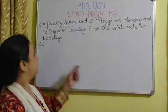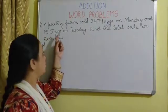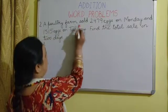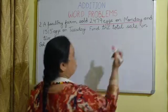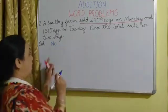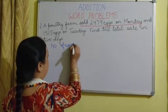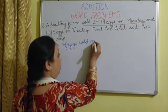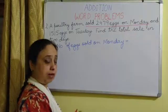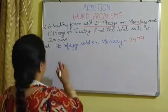The next word problem is: A poultry farm sold 2479 eggs on Monday and 1515 eggs on Tuesday. Find the total sale in two days. The first sentence tells us the farm sold 2479 eggs on Monday, so the first statement will be: Number of eggs sold on Monday = 2479.